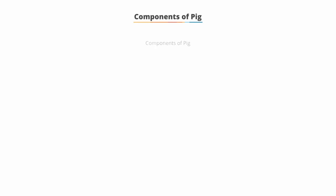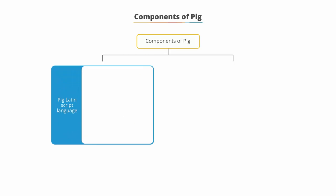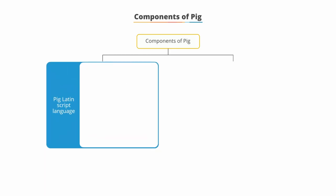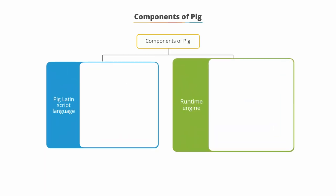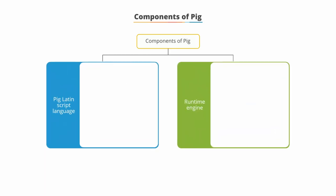Components of Pig. There are two major components of Pig: a PigLatin script language and a runtime engine.